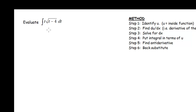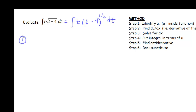So here we have an indefinite integral that we need to find. The first thing I would do is rewrite that square root as a power. So I'm going to have t times (t minus 4) to the 1/2 power dt. Now let's run through our steps. First, we figure out what we would choose for our inside function. My guess is that our inside function is t minus 4. So I'm going to let u equal t minus 4. That's step 1.